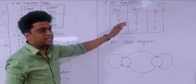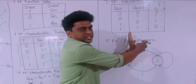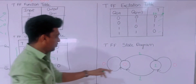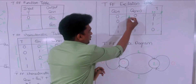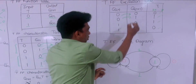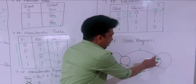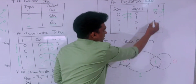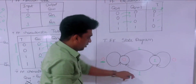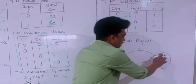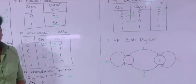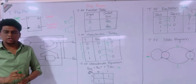This is how the excitation table has been drawn — with the help of present state and next state, we write the flip-flop inputs. Finally, the state diagram: for state 0 to 0, the input is 0. For 0 to 1, the input is 1. For 1 to 0, the input is 1. And for 1 to 1, the input is 0. So this is the state diagram for the T flip-flop and this is the working of the toggle flip-flop. Thank you for watching the video.